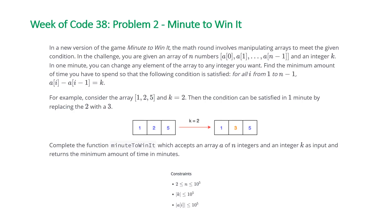The problem states: in a new version of the game Minute to Win It, the math round involves manipulating arrays to meet a given condition. You are given an array of n numbers and an integer k. In one minute you can change any element of the array to any integer you want. Find the minimum amount of time you have to spend so that for all i from 1 to n-1, the difference between the i-th element and the i-1th element is equal to k. For example, consider the array 1, 2, 5 and k equal to 2 — the condition can be satisfied in one minute by replacing the middle element 2 with a 3.